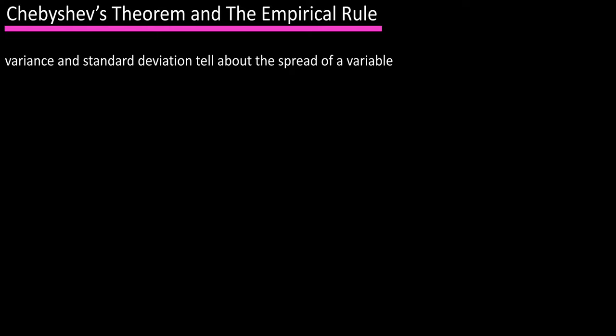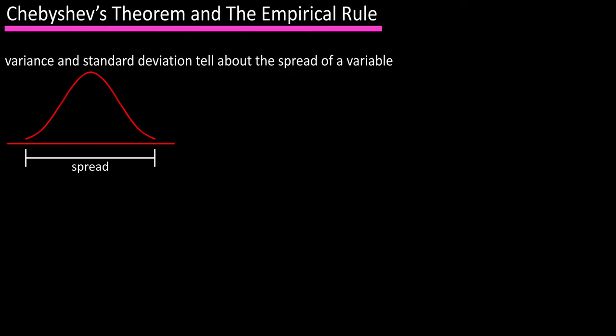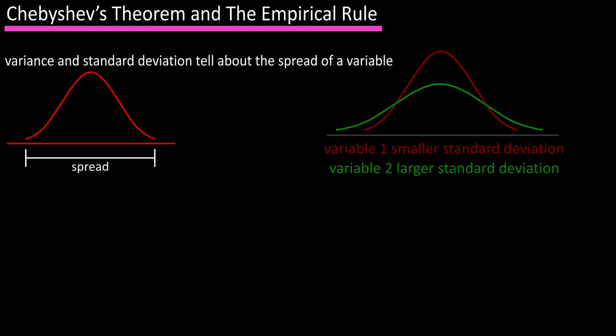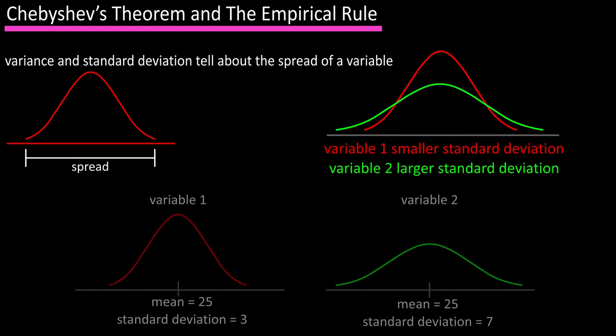The variance and standard deviation help us understand the spread or dispersion of a variable. In comparing two variables, the variable with the smaller standard deviation will be less spread out. So we can have two variables with the same mean, but variable 1 has a smaller standard deviation than variable 2, so the data for variable 2 will be more spread out, as you see here in these graphs.